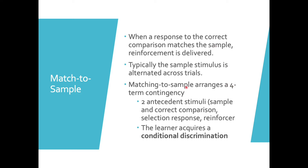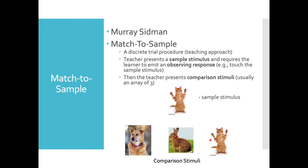Matching to sample is sort of a four-term contingency — there are two antecedent stimuli, the correct comparison selection response, and then a reinforcer. We would say that the learner has acquired a conditional discrimination, because the correct response depends not only on the sample but also on what the teacher requires. The learner must also learn which comparison stimuli are incorrect.